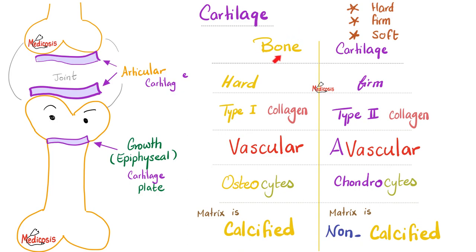How about the minerals? Bones have calcium; the cartilage matrix is not calcified. Bones are vascular; cartilages are avascular. That's why a fracture that hits the epiphyseal growth cartilage plate in a child is devastating — this cartilage cannot regenerate because it does not have blood vessels. How do cartilages eat then? By diffusion from surrounding structures.